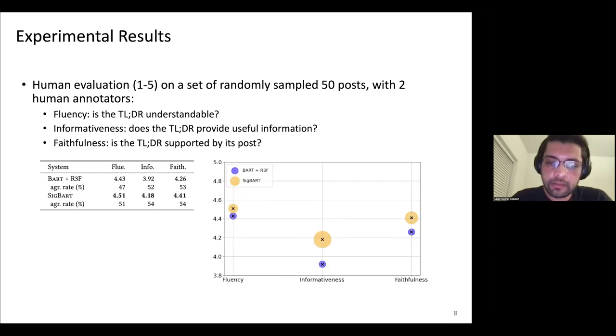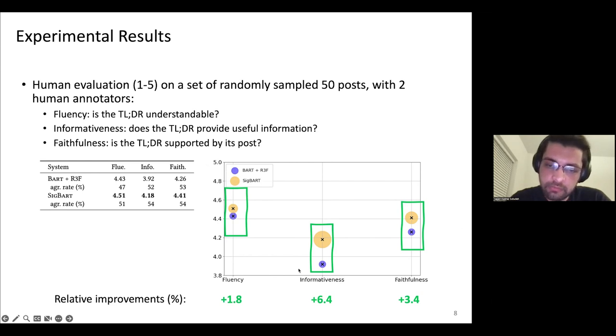Here are the results of the human evaluations. As you can see, our system makes big gains in all evaluation metrics with relative improvements of 1.8, 6.4, and 3.4 percent for the fluency, informativeness, and faithfulness metrics.